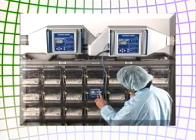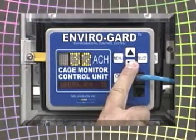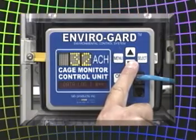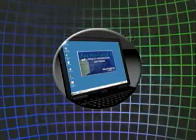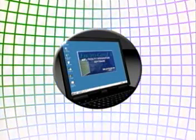Cage air changes per hour, temperature, humidity, and light level can be monitored around the clock. Data can be stored at several locations inside the control unit and downloaded later to any PC with an open serial port, across a local area network, or off-site by remote internet connection.